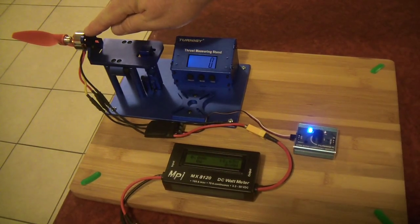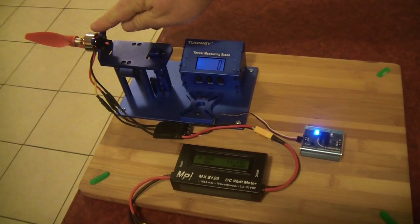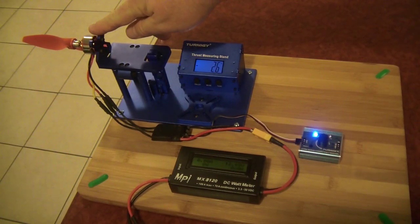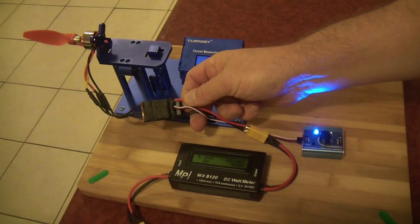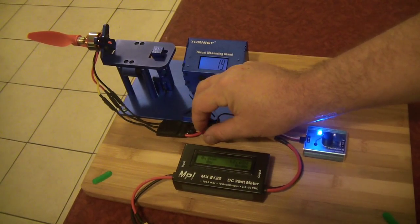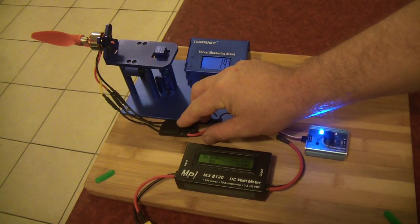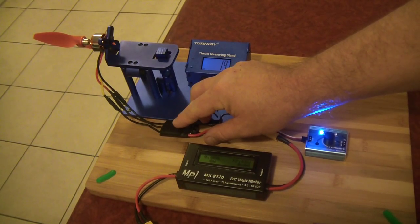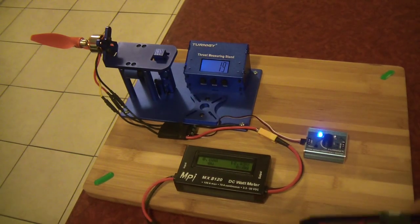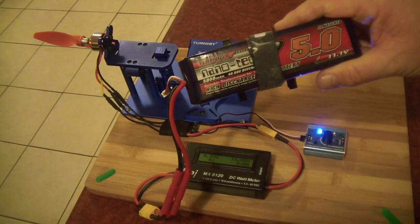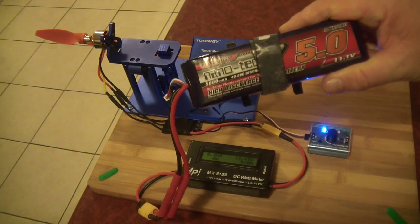This is the 2822 motor running an HQ 8x4.5 propeller. I'm using the Armattan 30 Amp ESC flashed with the latest Simon K firmware and Comp PWM and motor brake is turned off. I'm powering it with a Nanotech 5000mAh 3S battery.